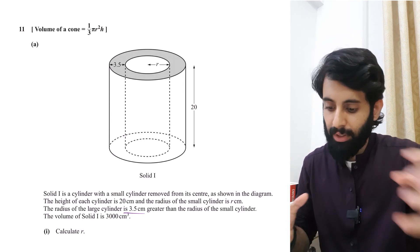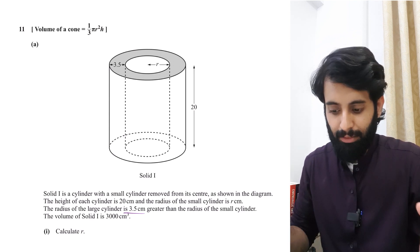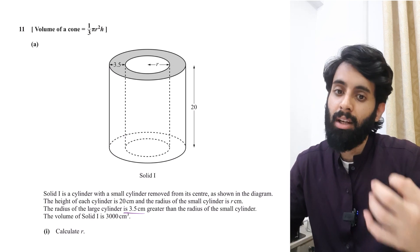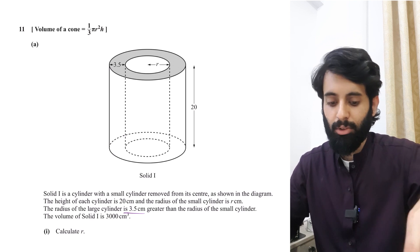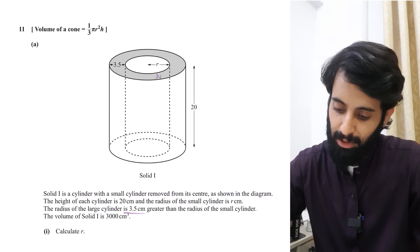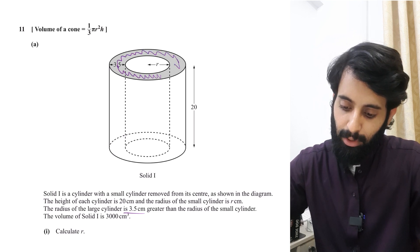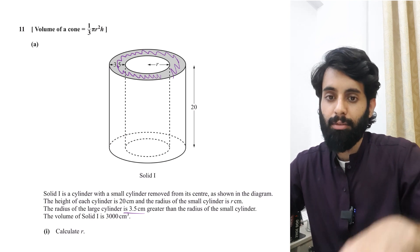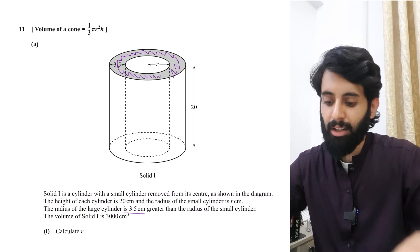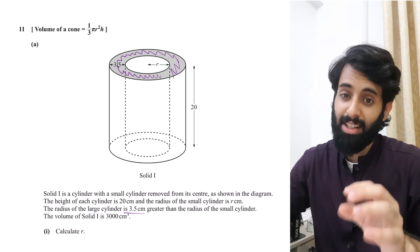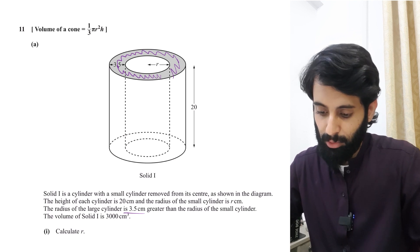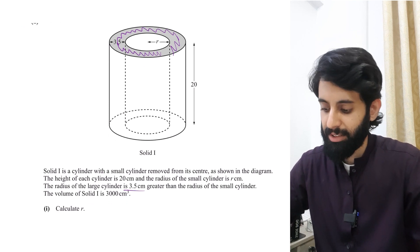You have a big cylinder from which a small cylinder is removed. The leftover shape doesn't have a specific formula, so here's how to find the volume of the solid: first find the volume of the entire cylinder with radius r plus 3.5, then subtract the volume of the removed cylinder. That difference equals the volume of the solid, which is 3000.